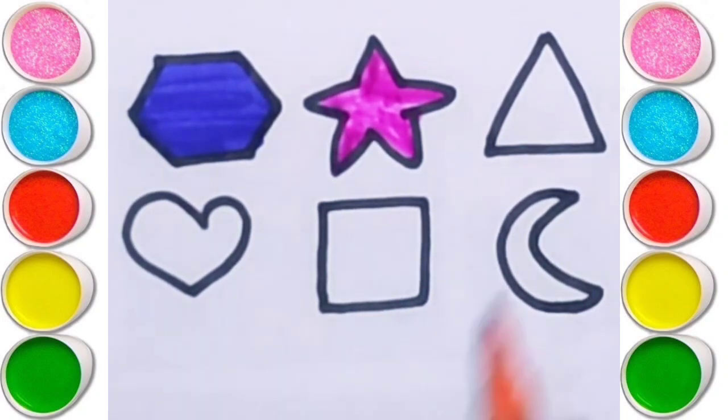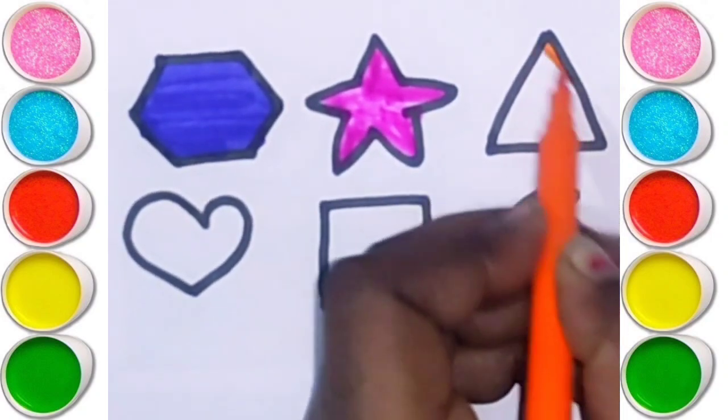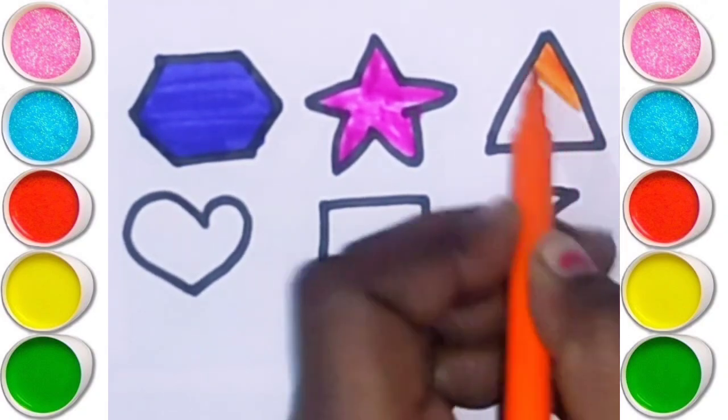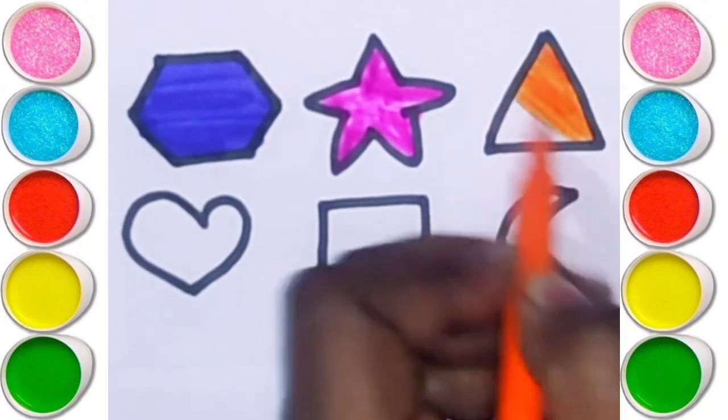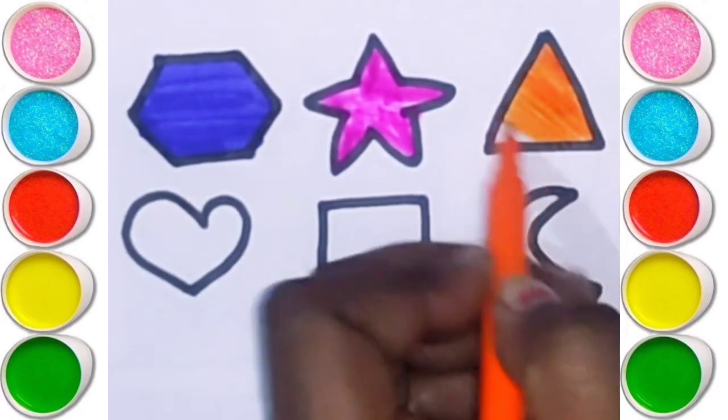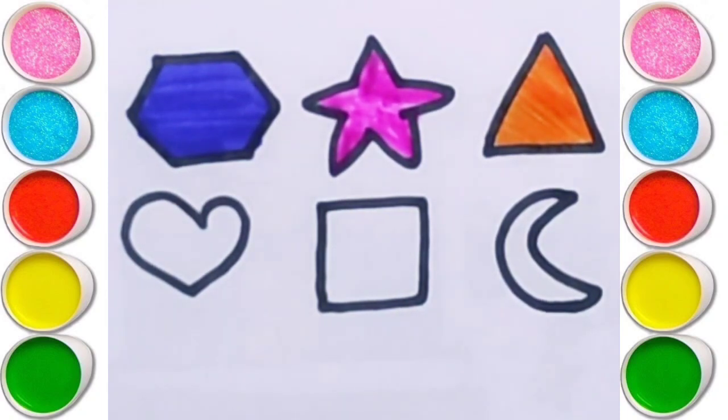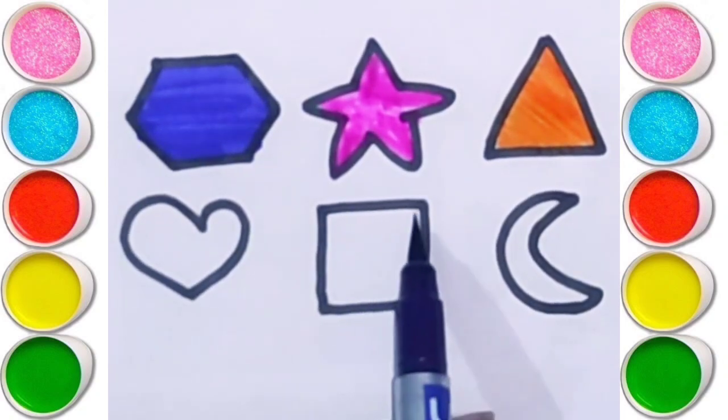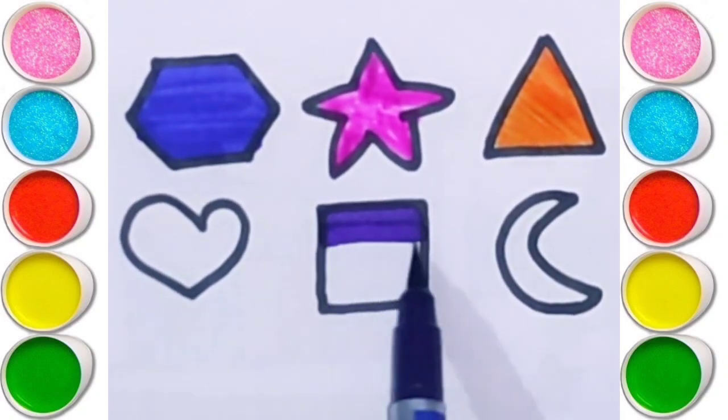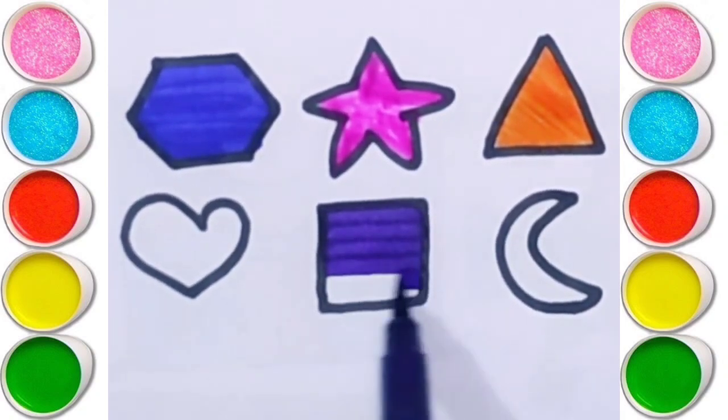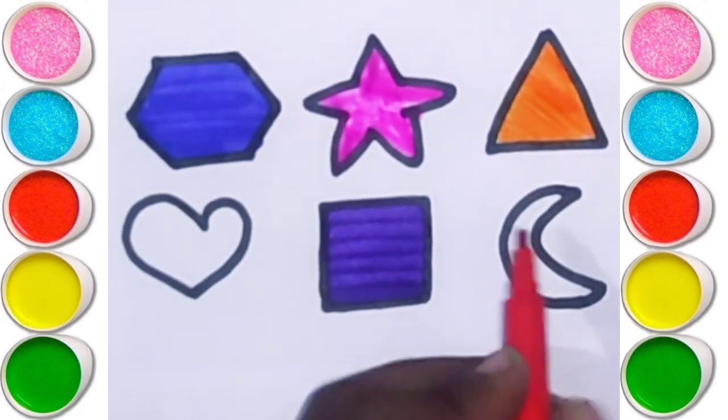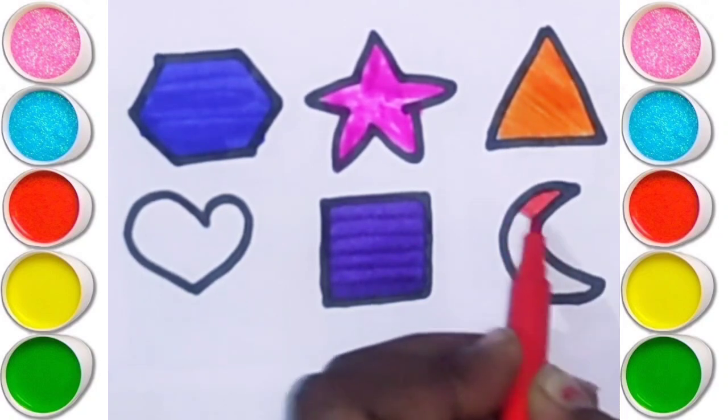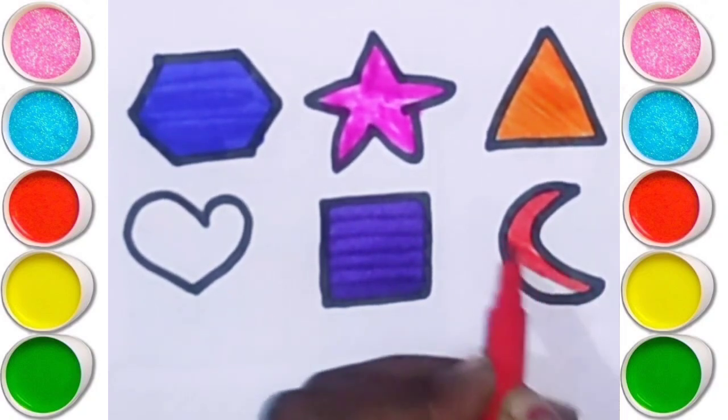Star. How do you draw a star? Very good. A, B, C, D, E, F, G, H, I, J, K, L, M, N, O, P, Q, R, S, T, U, V, W, X, Y, and Z. Now I know my ABCs. Next time won't you sing with me.